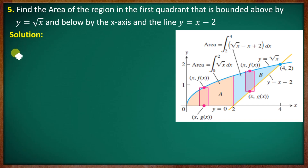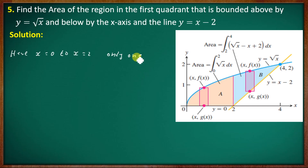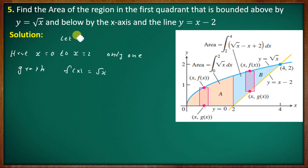From x equals 0 to x equal to 2, there is only one graph. This graph is f of x equal to root x. And g of x is equal to x minus 2.